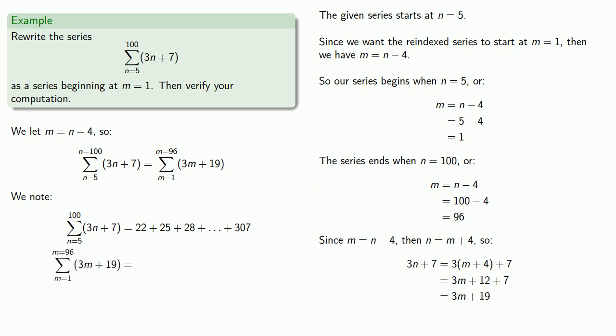Meanwhile, our re-indexed series is going to start with m equals 1, so the first term is going to be... When m equals 2, our second term is going to be... Our third term will be when m equals 3. And our last term will be when m equals 96. The two series begin and end in the same way, so the two series appear to be the same.